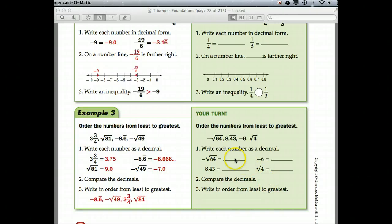Okay, did you get negative 8.0, negative 6.0, 8.4343, and 2? So, if you order in from least to greatest, negative square root of 64, negative 6, square root of 4, and 8.43 repeating. Okay, good job.